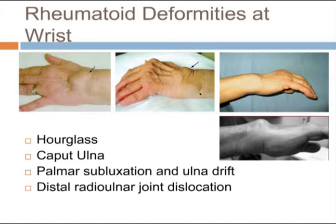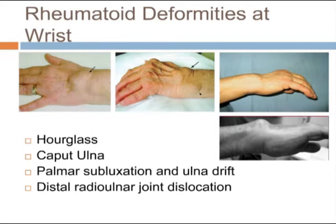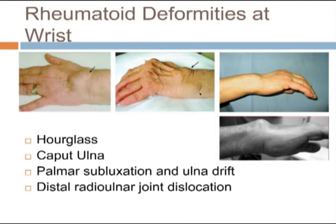Beyond the familiar swan neck and boutonnière deformities, there's a spectrum of rheumatoid changes at the wrist. Early stages show an hourglass appearance from synovitis surrounding the extensor tendon sheaths beneath the extensor retinaculum. Caput ulna involves posterior subluxation with distal radioulnar joint instability, causing a bulging appearance and excess wear on the overlying extensor tendons.